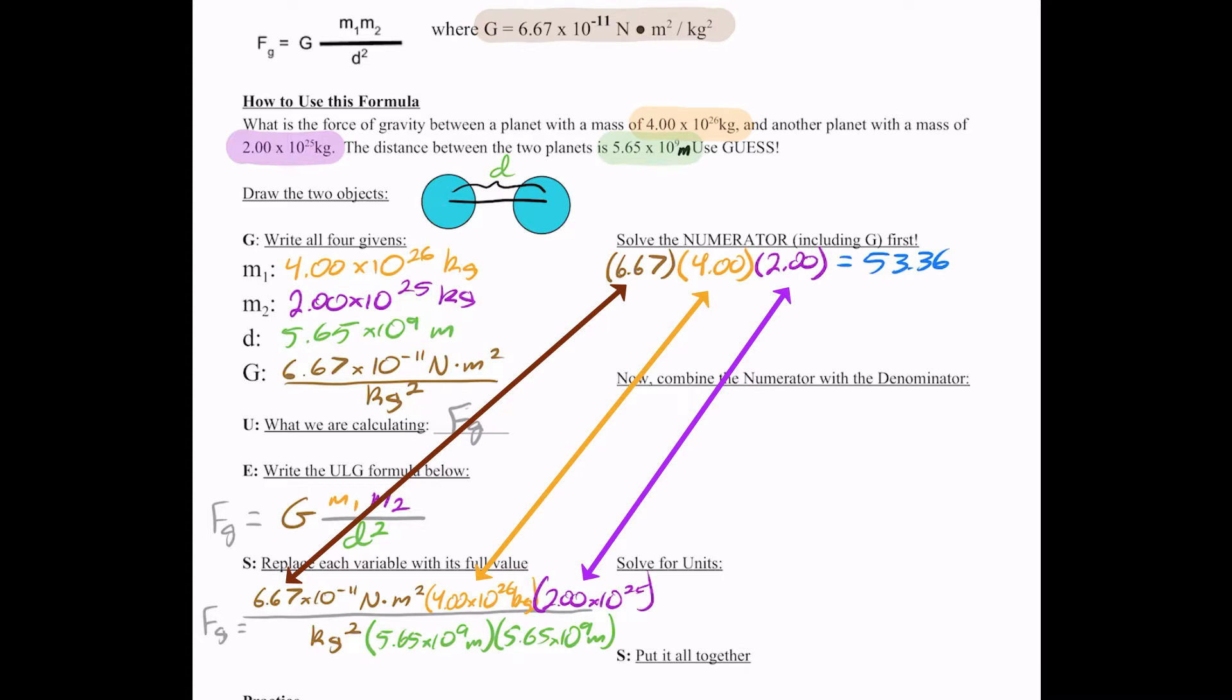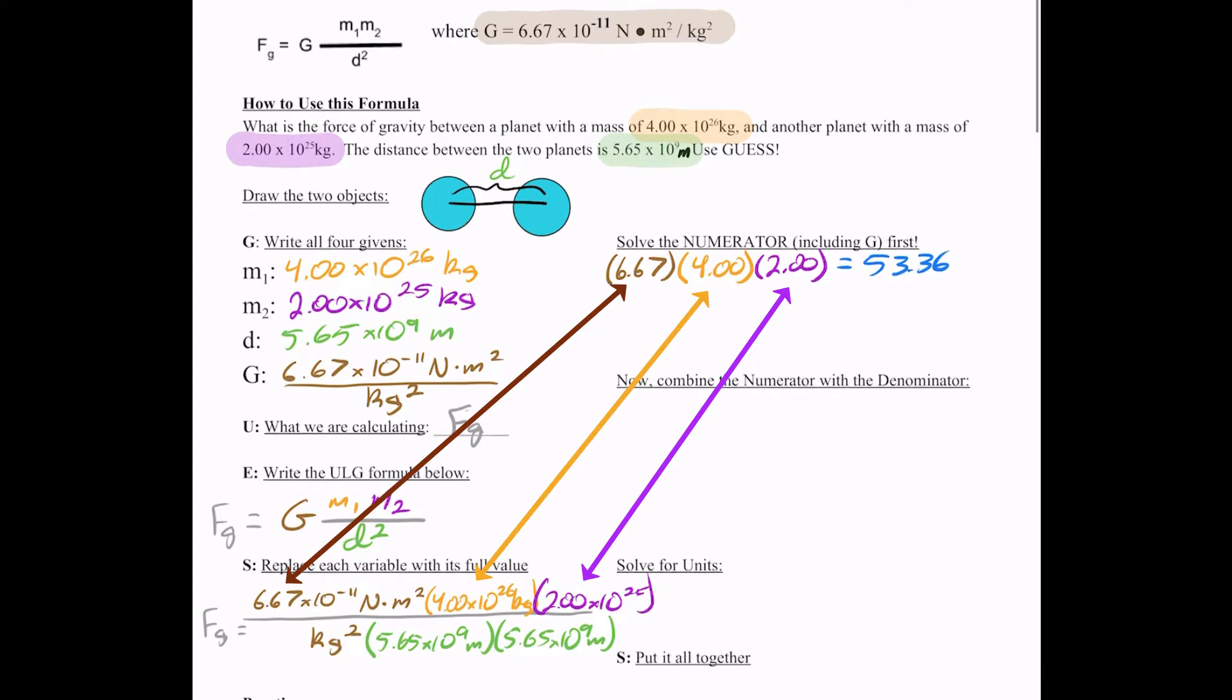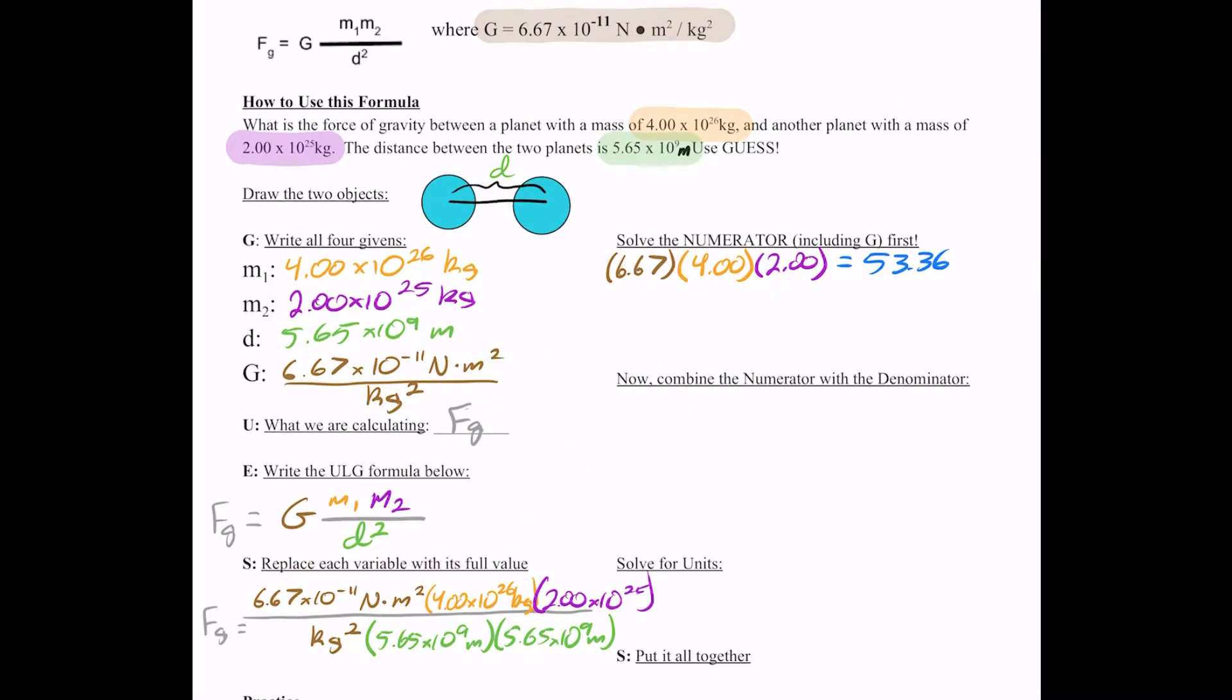I'm just multiplying those right now together. And now what do I need to do with the exponents? Add them together, yes. So our exponents are what? So negative 11 plus 26 plus 25 gives us 40. So we have our decimal that's 53.36 times 10 to the 40th. That is the answer to our numerator. Not so bad, right?